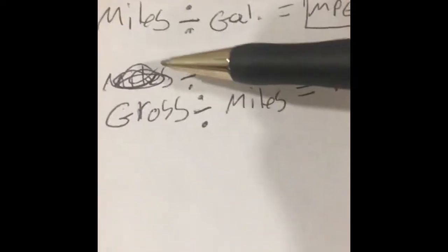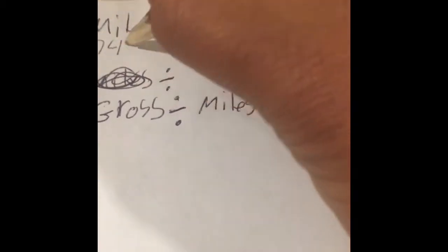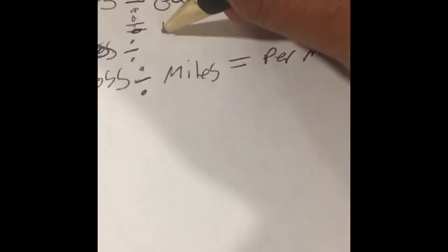So by doing that, you put in for this number here, miles would be 747 divided by gallons, which would be 110.